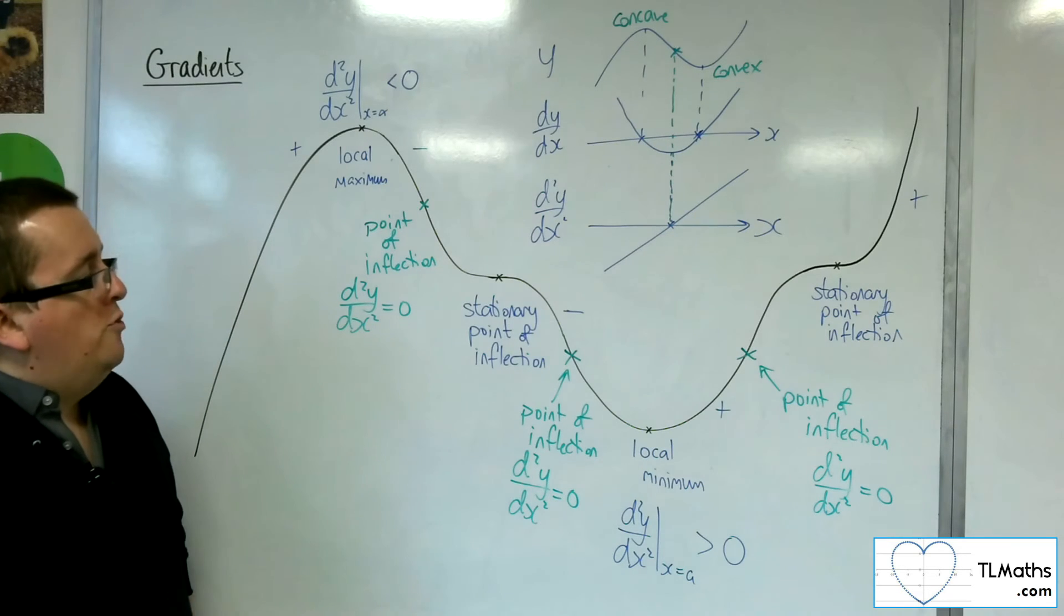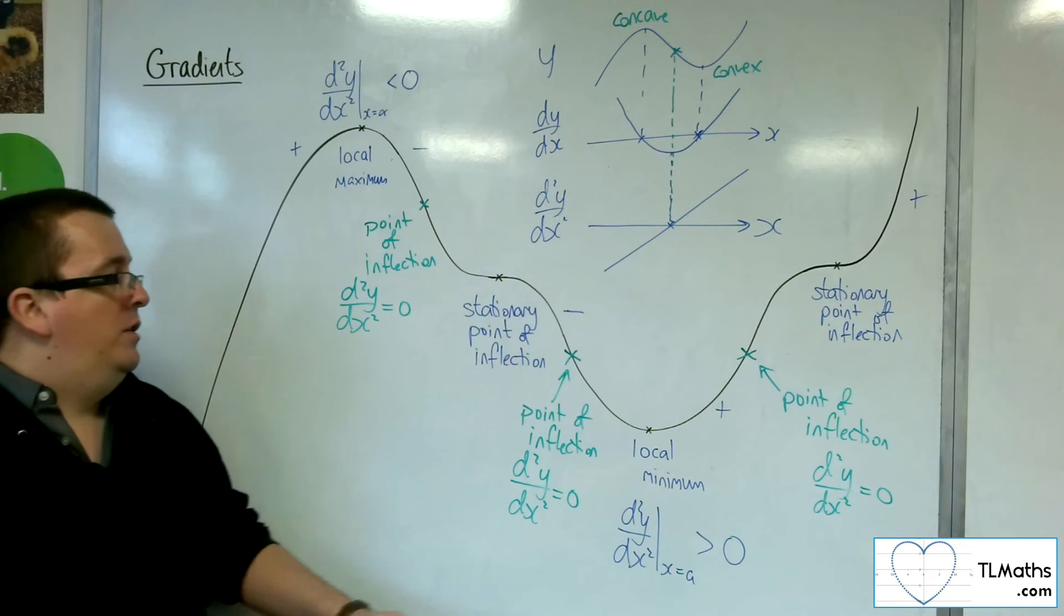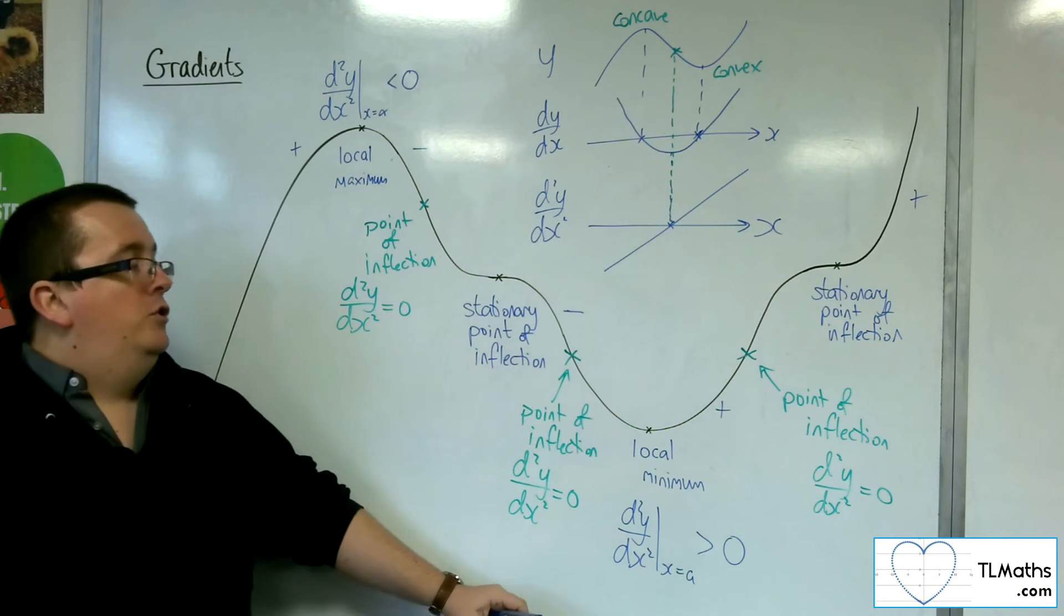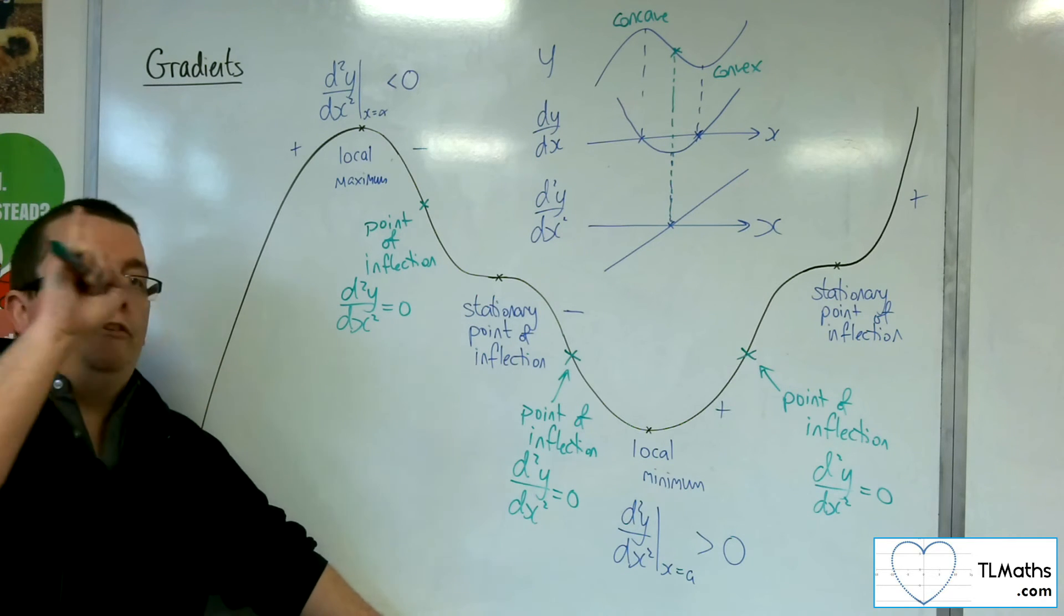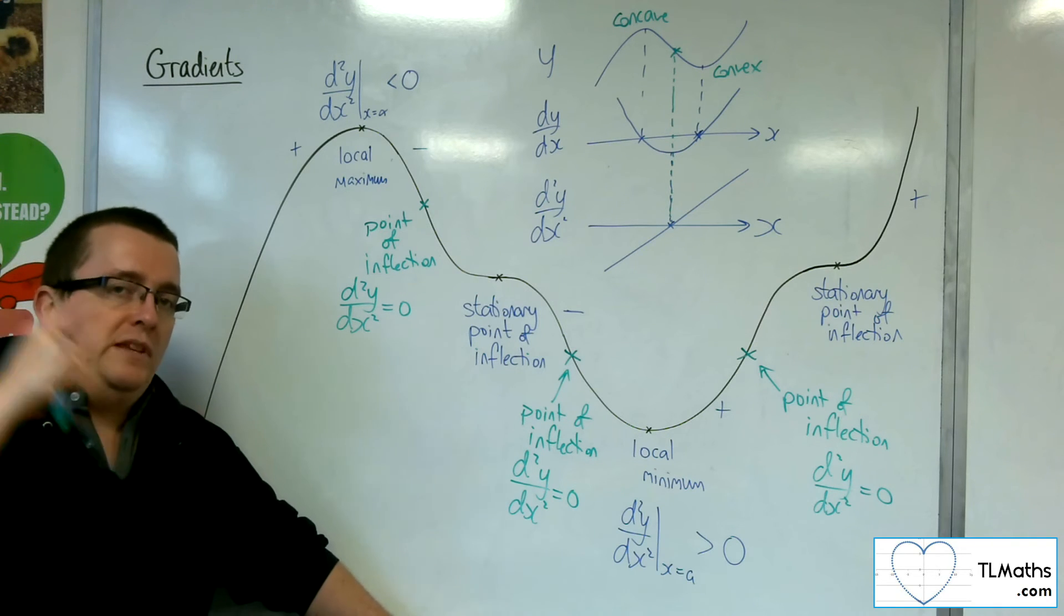So, what we're actually finding is that points of inflection occur, general points of inflection, non-stationary points of inflection occur when the second derivative is zero.